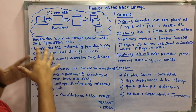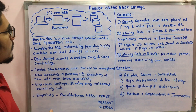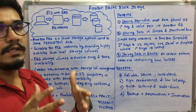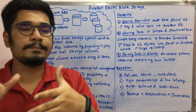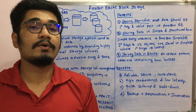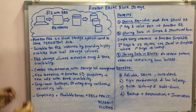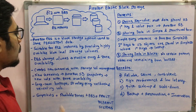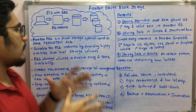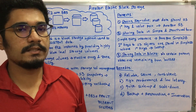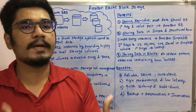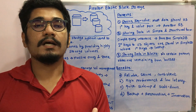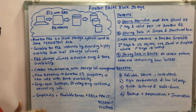Amazon EBS is a block storage system used to store persistent data — not temporary data, but persistent data of larger size used for a later period of time. It is suitable for EC2 instances, providing highly available block-level storage volumes. It stores data in key-value format in a structured form and in block storage at various levels of hierarchy, depending on what type of data it actually is.